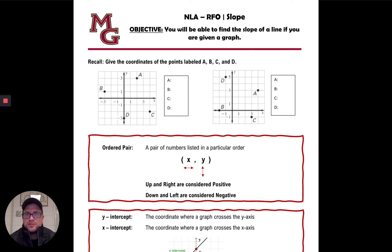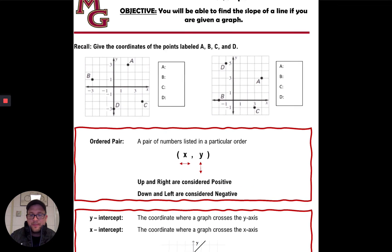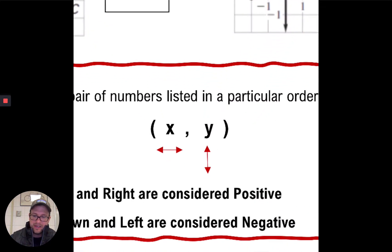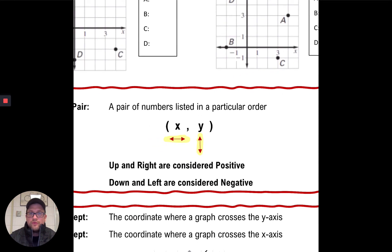Before we start talking about slope, let's first recall some information about the coordinates of points. When we talk about points, we always talk about them in terms of the ordered pair — just a list of numbers in a particular order. The x coordinate always comes before the y coordinate, similar to the alphabet. Your x coordinate reflects left and right, and y is always up and down. Moving right or up is a positive value; moving left or down is negative.